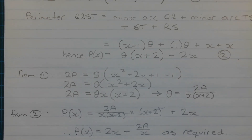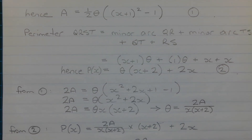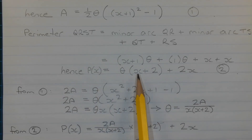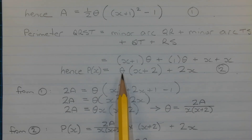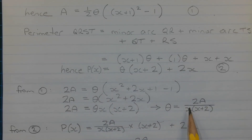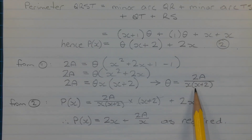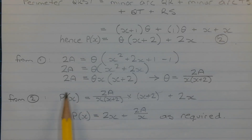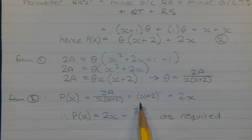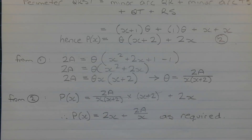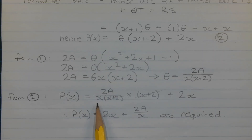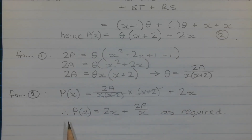From equation number 2, p of x equals theta times (x plus 2) plus 2x. We now have an expression for theta: theta equals 2a over x times (x plus 2). Substituting this for theta, we get p of x equals 2a over x times (x plus 2) times (x plus 2) plus 2x. The (x plus 2) in the denominator cancels with (x plus 2) in the numerator, leaving 2a over x plus 2x. Therefore p of x equals 2x plus 2a over x, as required.